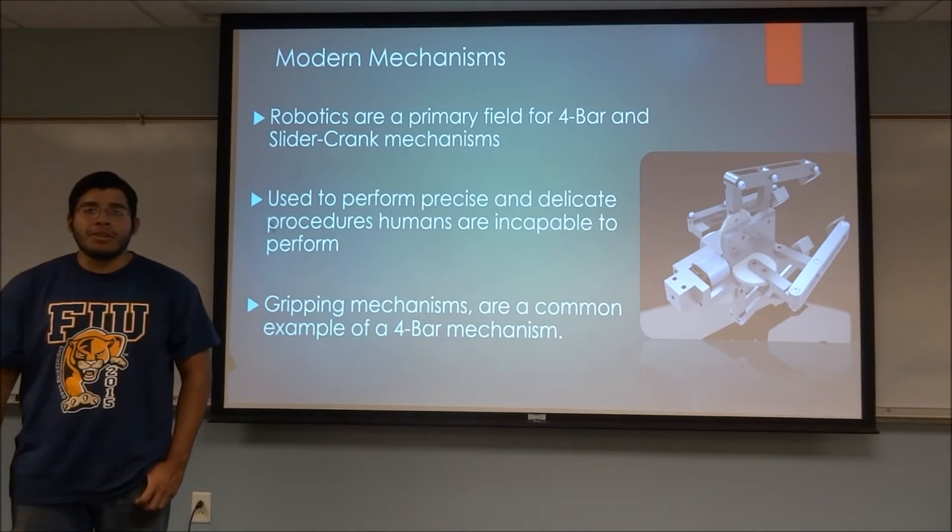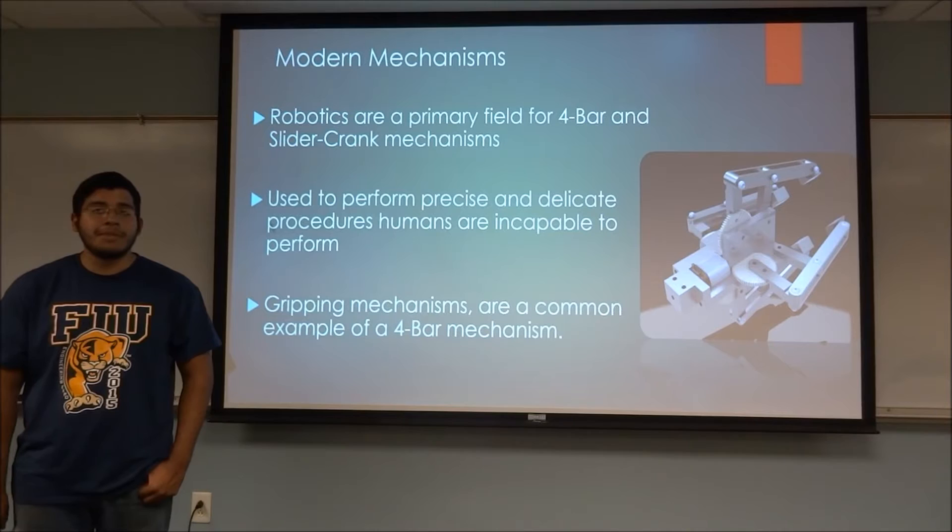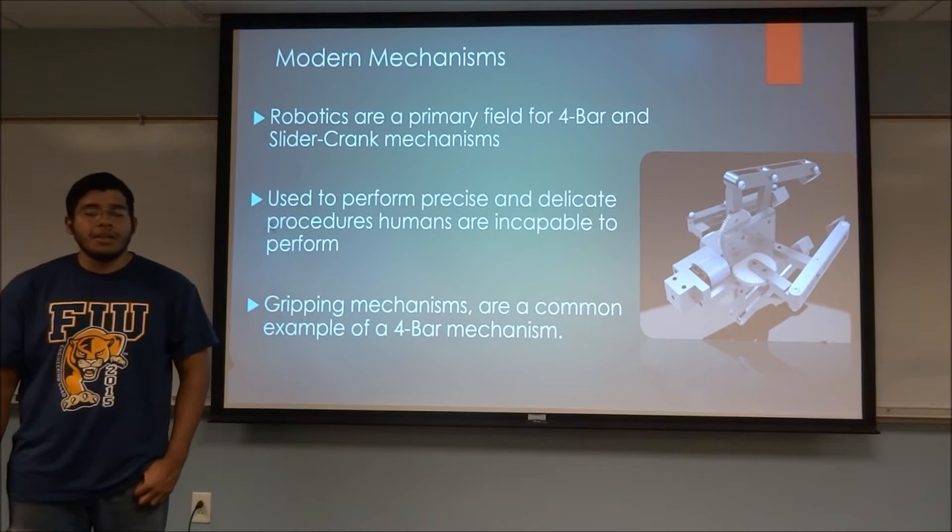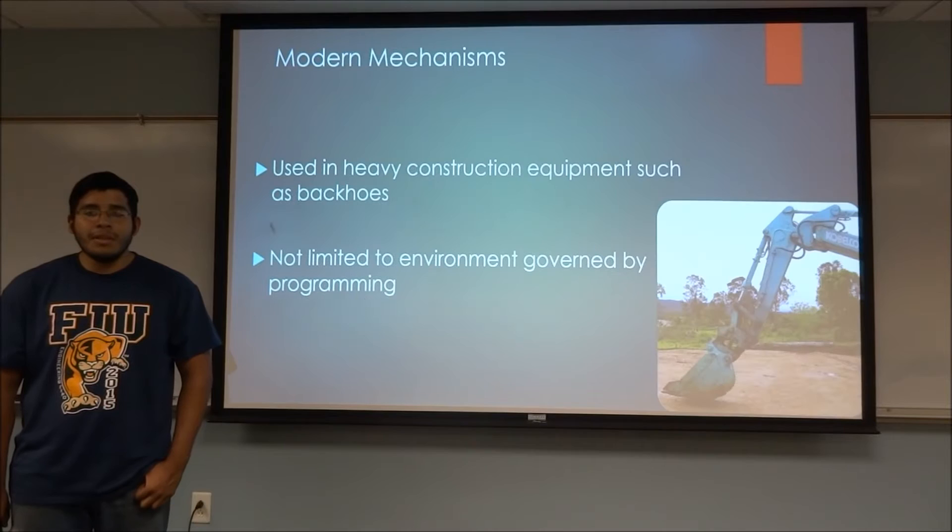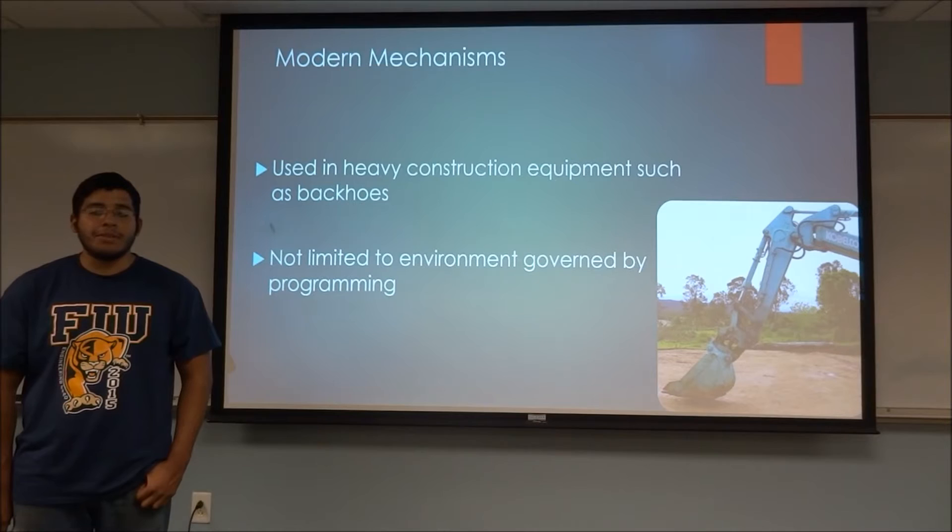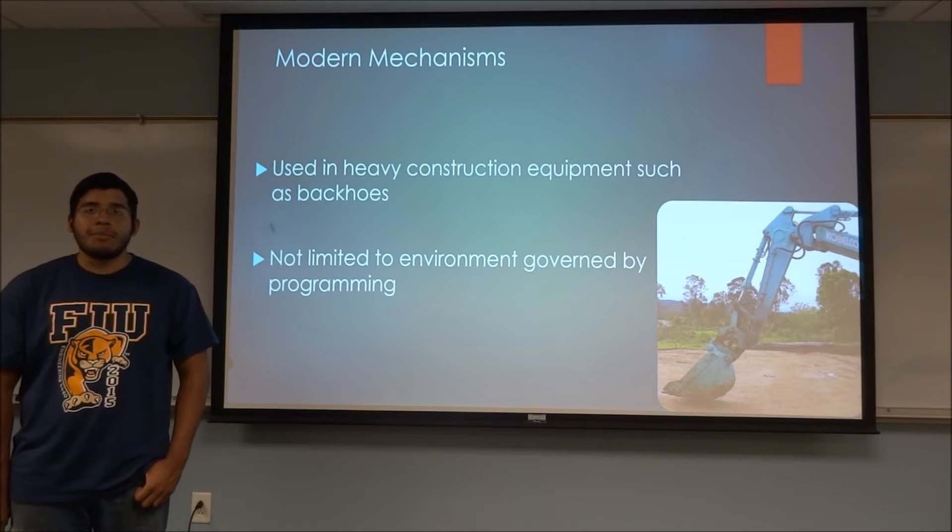An example of modern mechanisms: Robotics is a primary field for four bar and slider crank mechanisms. They are used to perform precise and delicate procedures that humans are incapable of doing. Gripping mechanisms are a common example for a four bar mechanism. Another example is their use in heavy machinery and construction equipment such as backhoes, but they are also not limited to environments such as those governed by programming.